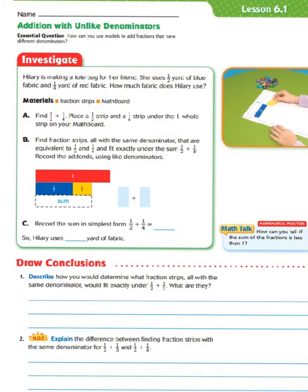Remember, multiples of two would be two, four, six, eight, ten, twelve. Multiples of four would be four, eight, twelve, sixteen, twenty. So let's take a look at our two fractions: one-half and one-fourth.